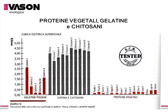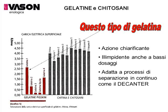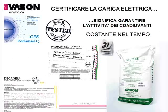Products that pass that test are branded with a specific label. We have plant proteins and chitosans. We are also referring to gelatines, which are very powerful as a clarification agent that can provide effective separation also at low doses with fewer fine sediments. They are therefore suitable for continuous separation mechanisms such as those at work in decanters, which are dynamic separators.